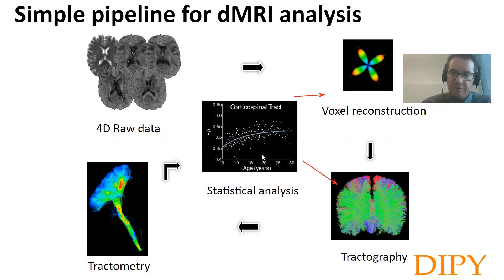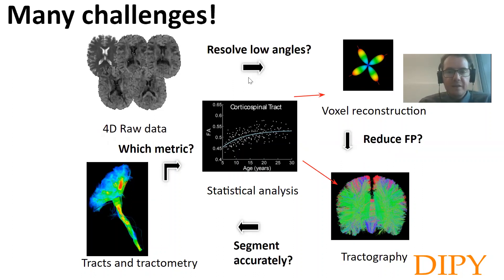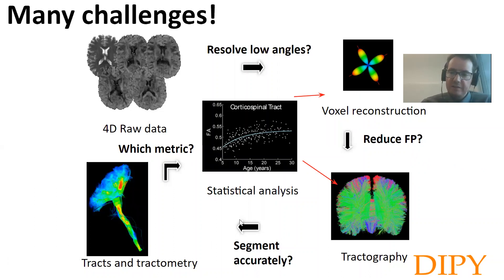None of these problems is trivial. Many of these were open, and still some of these problems are open until today. How to resolve low angles of crossing fibers? How to reduce false positives in tractography? How to segment accurately the bundles of tractograms? Which metric to use? All these hard-to-solve open problems.